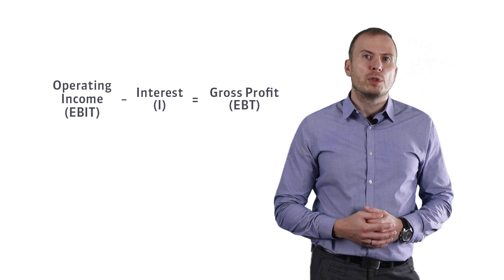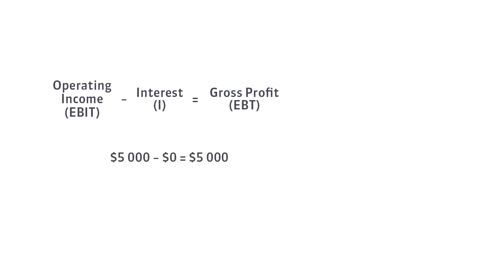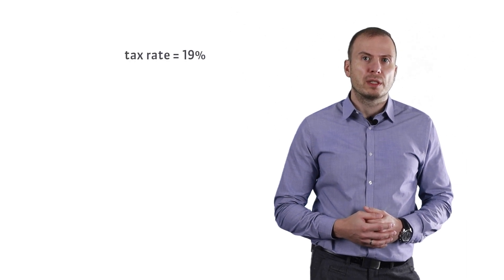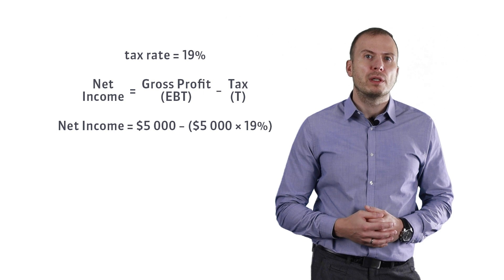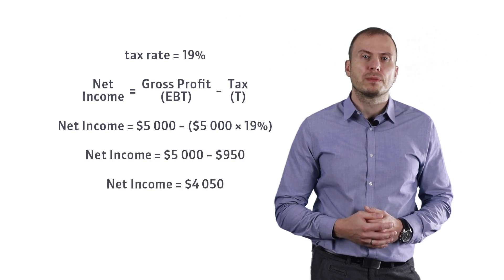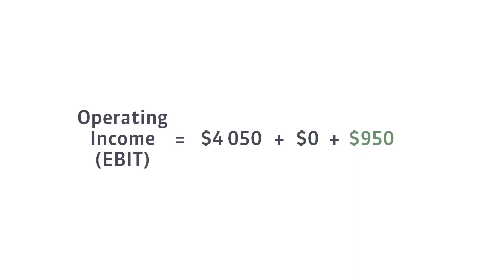In the previous example, the operating income was five thousand dollars per year. We had no interest, therefore the operating income will be equal to the gross profit. Suppose the income tax is 19 percent — this is the value of income tax in Poland. The net income will therefore be four thousand and fifty dollars. Let's try to calculate the value of the operating income from the net income. The formula will look like this. Let's check if we get five thousand dollars of operating income by putting the net income into the formula.